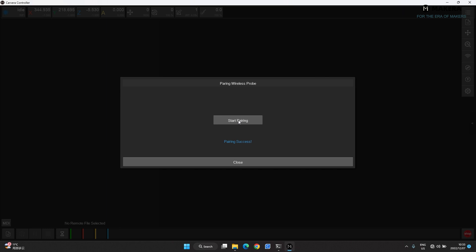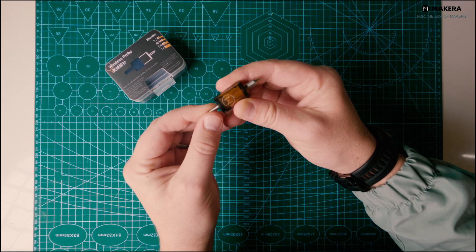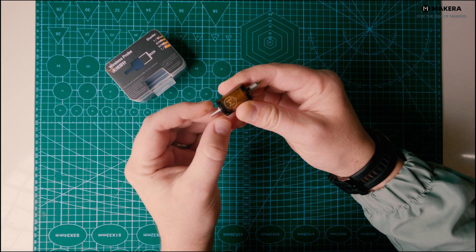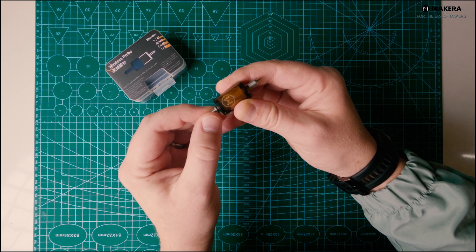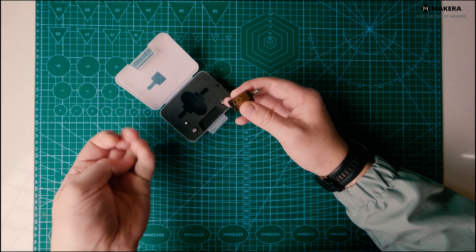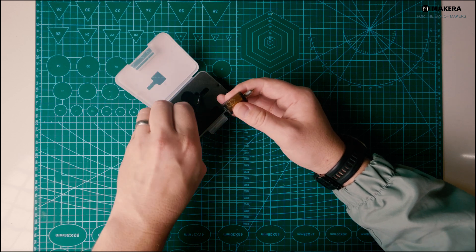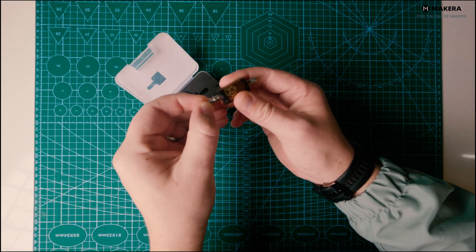To change the collet shaft, just unscrew the back end of the probe. Included is the four shaft options, the quarter inch, the eighth of an inch, four millimeter and six millimeter. Keep in mind that you have to make sure that the collet in the machine matches the probe shaft.